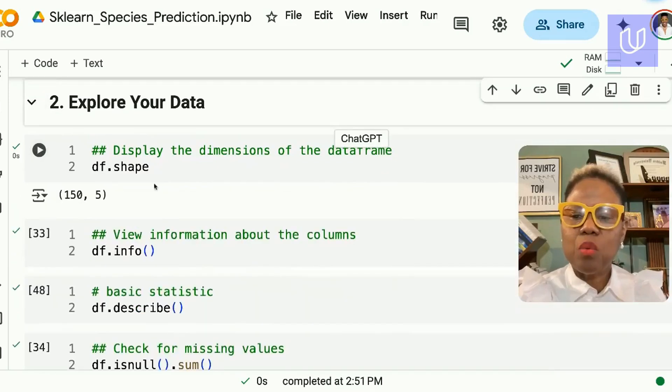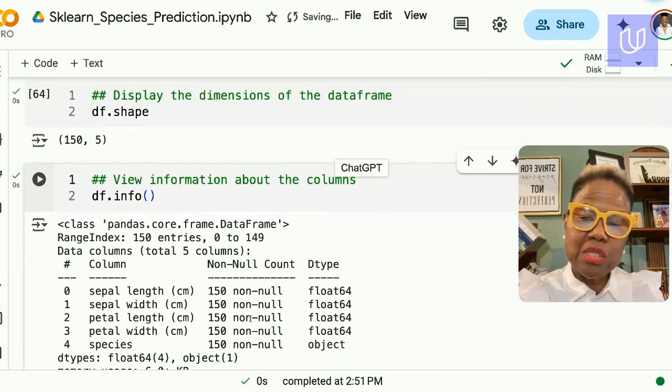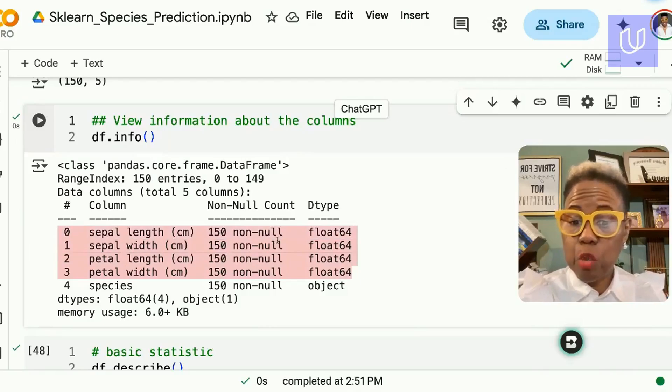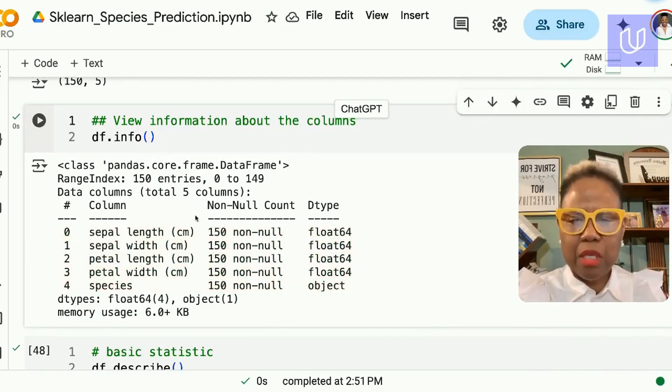Now we can explore our data. We use .shape to tell us just how large our dataset is. Here we have 150 rows and five columns. The .info to get information about the type of features. All four features are numeric or specifically float. The target is a categorical type variable called an object type in Python.